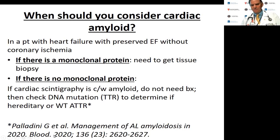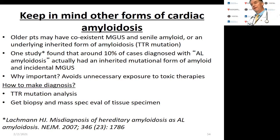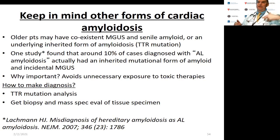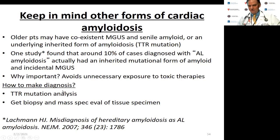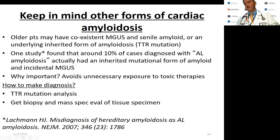A caveat: as we age it's common to have MGUS, particularly in African Americans — perhaps 7% or more above age 70. A Mayo Clinic study found that 10% of patients sent to them with apparent AL amyloid actually had inherited mutations, many TTR, confirmed by mass spec. This is important because someone with TTR mutation or senile wild type ATTR who just has incidental MGUS should not be exposed to toxic chemotherapy. You don't want to miss this distinction.